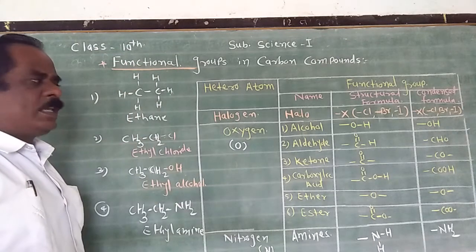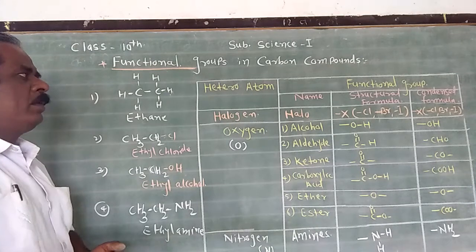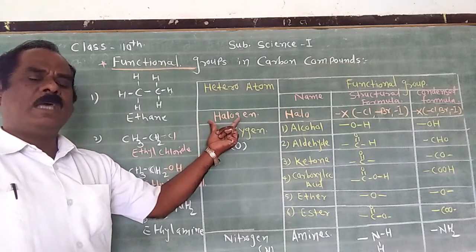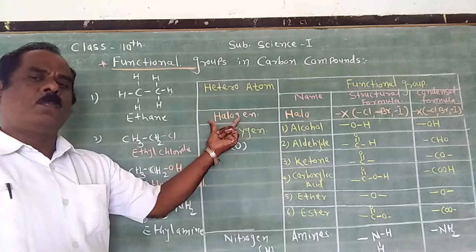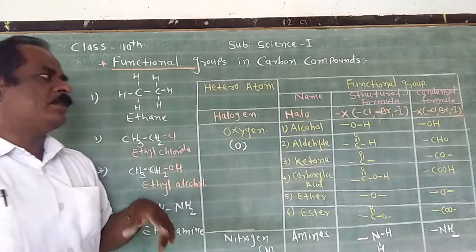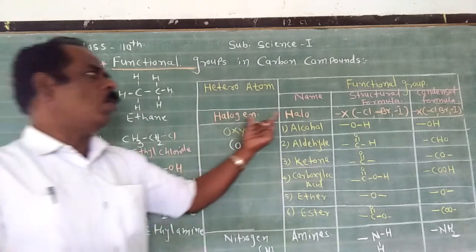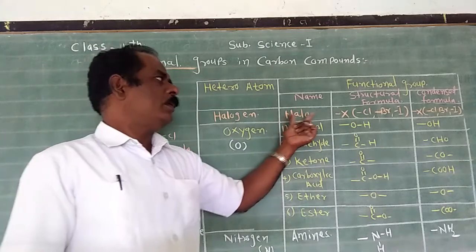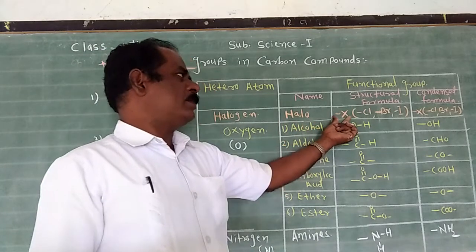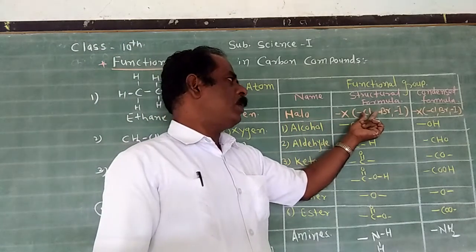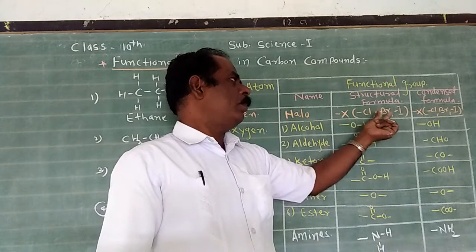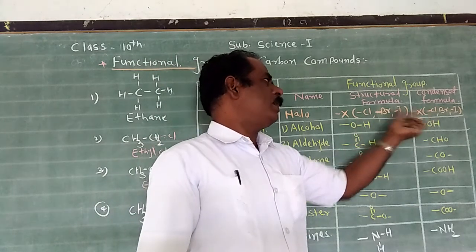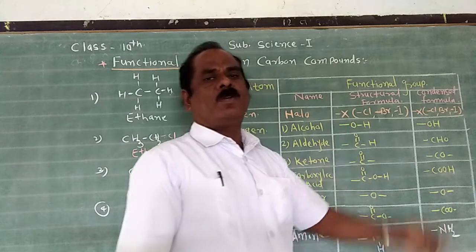In your syllabus, some functional groups are included. The first is the halogen group. In the halogen group, chlorine, bromine, and iodine are included. Its IUPAC name prefix is 'halo'. It is represented by bond X, where X may be chlorine, bromine, or iodine, as these are atomic bonds.